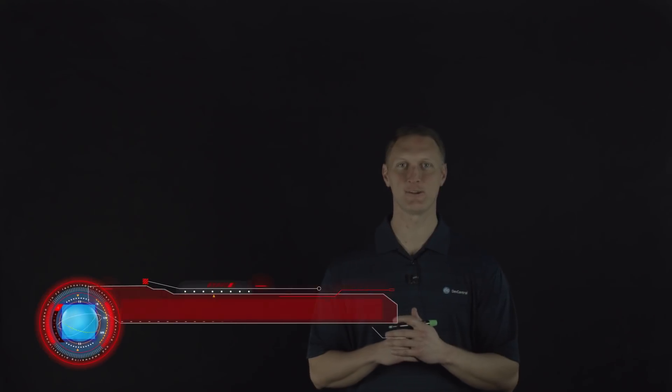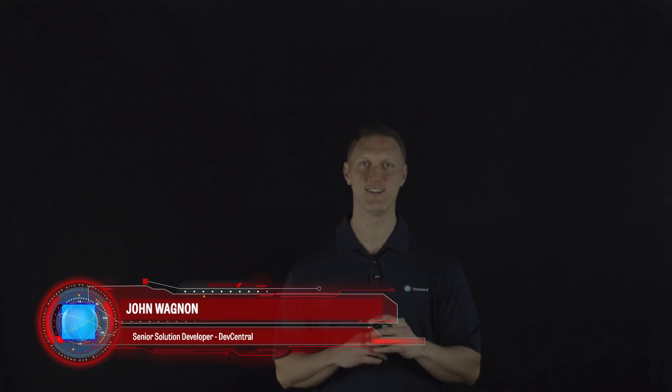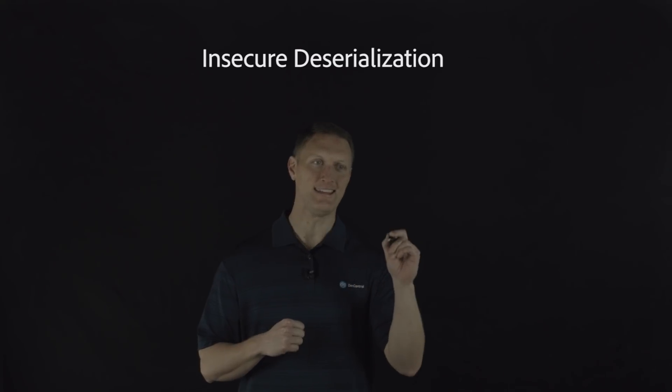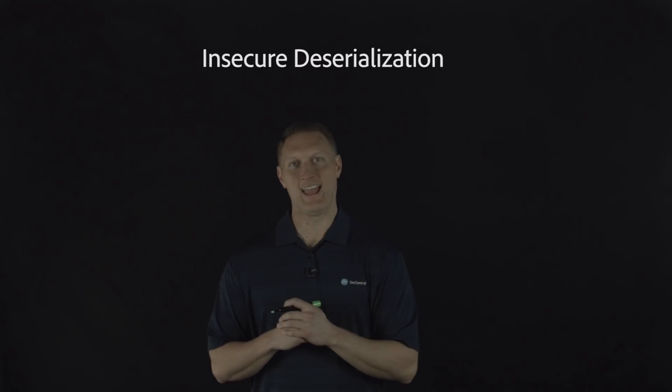Hey everybody, John Wagnon here with DevCentral. We're coming to you with another Lightboard lesson video. Today we're going to be in the OWASP top 10 again. Today is the number 8 out of 10 security risk on the OWASP list. The name of this risk is Insecure Deserialization. And this is new to the top 10 actually this year. It was not on the last top 10 list.